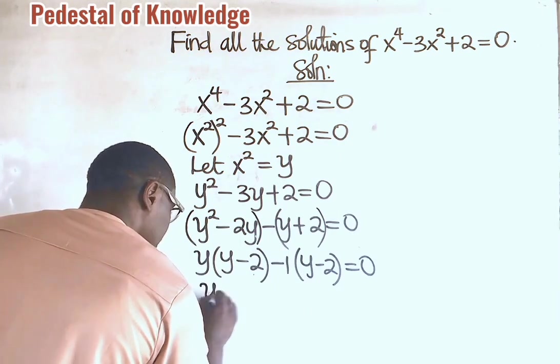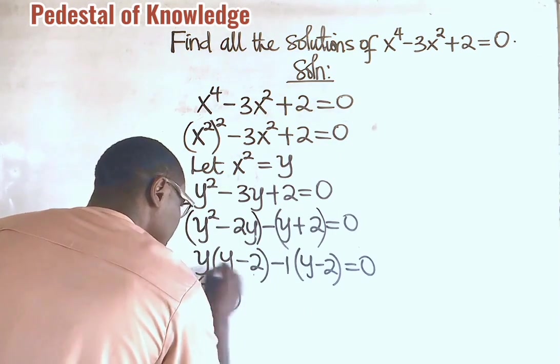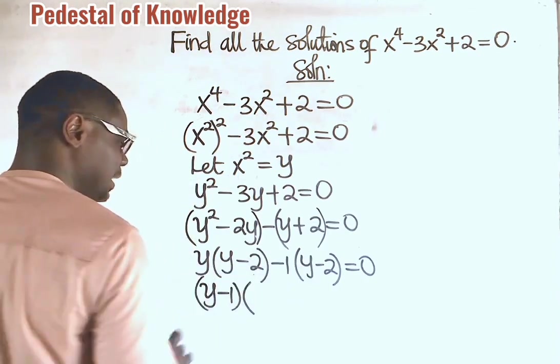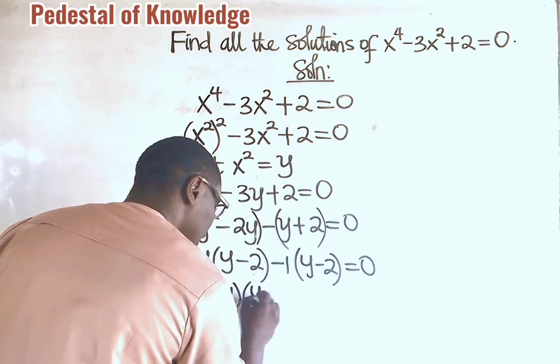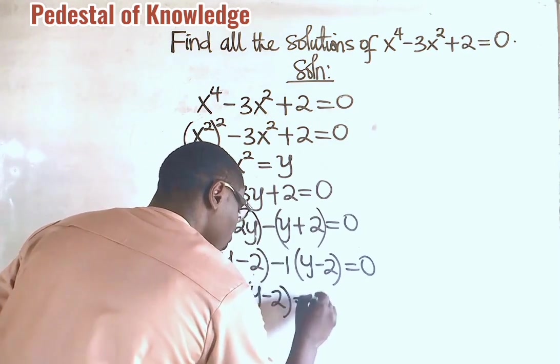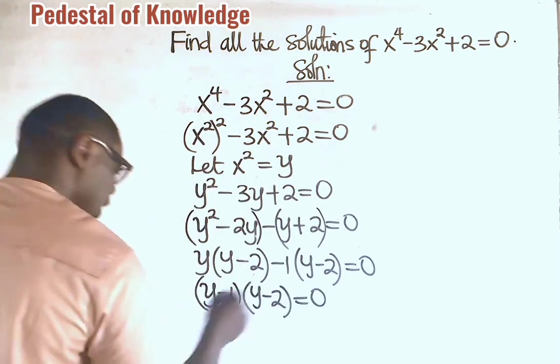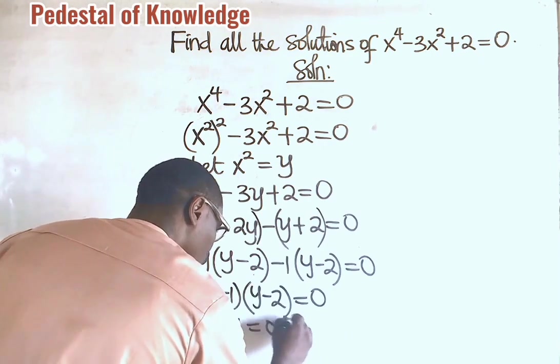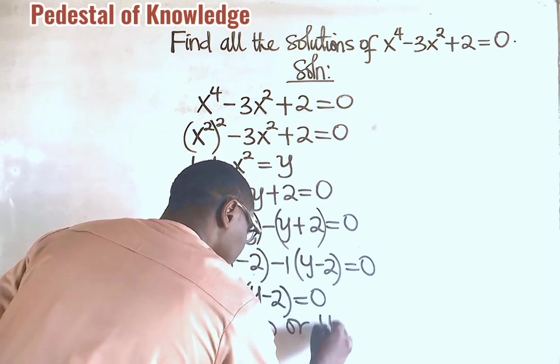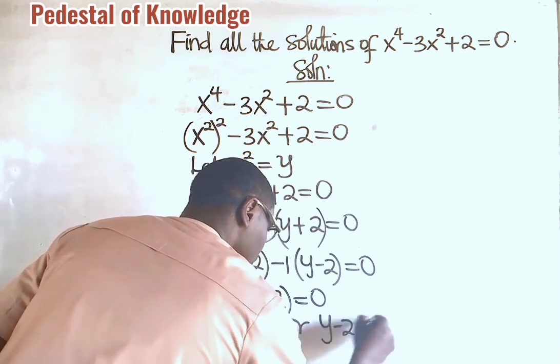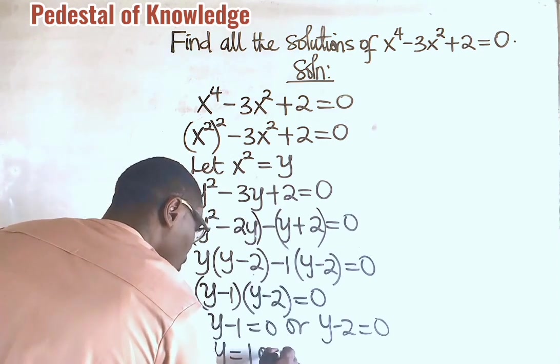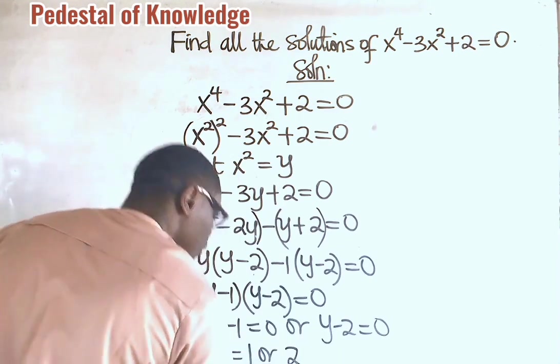Now we collect the factor outside the bracket as one single factor. So, we have y minus 1, that is this and this, into we now pick one of the identical factors. That is y minus 2 is equal to 0. So, it then implies that y minus 1 equal to 0 or y minus 2 is equal to 0. So, from here, y is equal to 1 or 2.